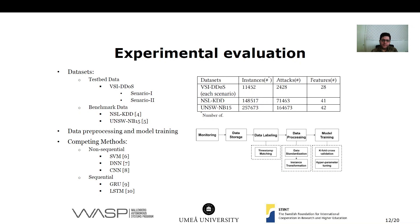For experimental evaluation, we used four datasets: two testbed datasets for scenario one and scenario two, and two benchmark datasets — NSLKDD and UNSW-NB15. The data processing and model training pipeline includes monitoring data storage, data labeling, data processing, and model training. We have two sets of baseline methods for comparison: non-sequential baselines including support vector machine, deep neural network, and convolutional neural network; and sequential baselines including gated recurrent units and long-short-term memory network.